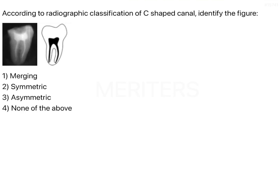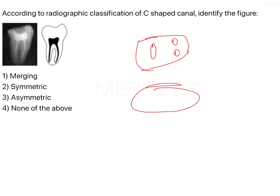So what exactly is a C-shaped canal? Usually when you look at the mandibular molars, you have a mesiobuccal or mesiolingual canal and one large distal canal. In C-shaped canals, your mesiobuccal and distal canal are confluent with each other, with the mesiolingual staying separate — or the other possibility is the distal fuses with the mesiolingual and your mesiobuccal is present as it is. This gives the appearance of a C-shape, and thereby it is called a C-shaped canal.